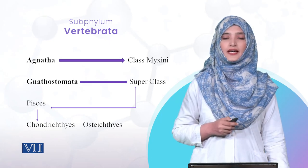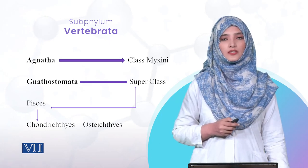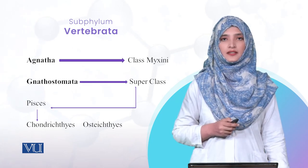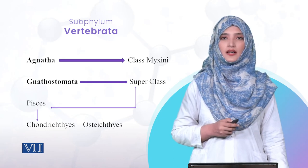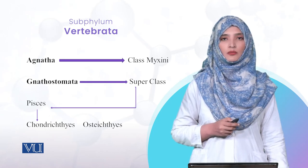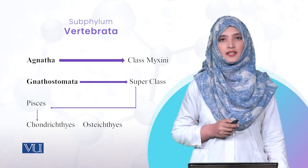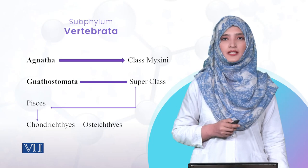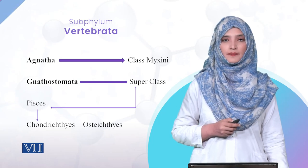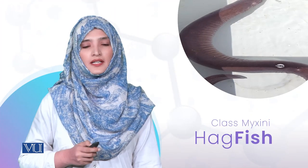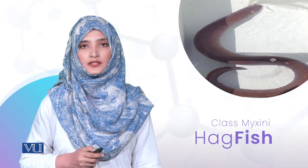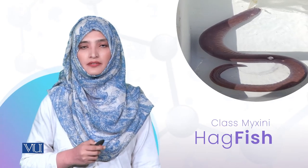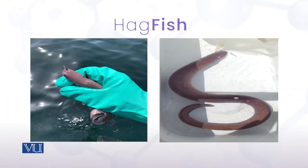Agnatha میں دو classes ہیں: Class Myxini اور Class Cephalaspidomorphi. ہم Class Myxini کے بارے میں discuss کریں گے، جس کا ایک member Hagfish ہے۔ Hagfish کے بارے میں ہم discuss کرتے ہیں۔